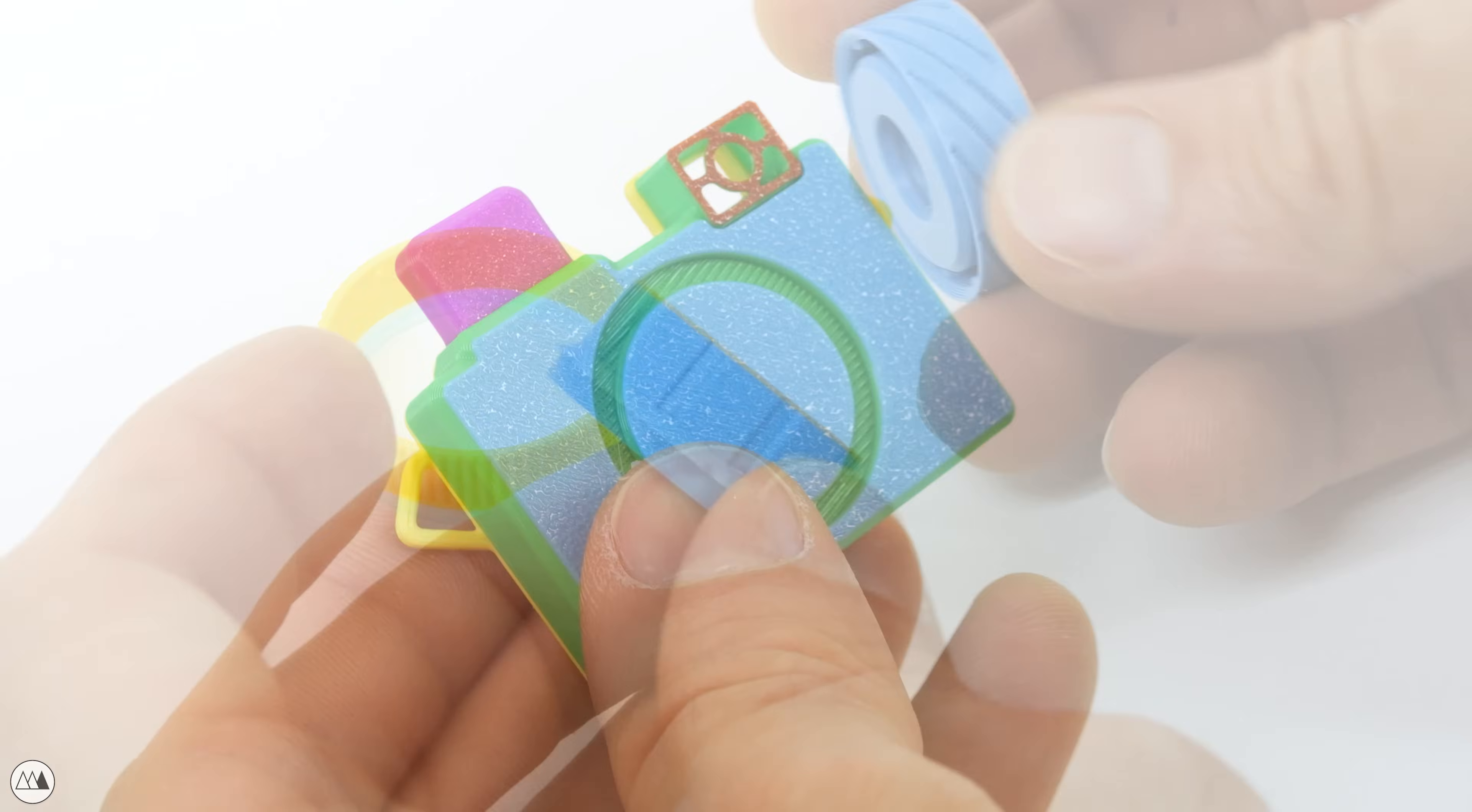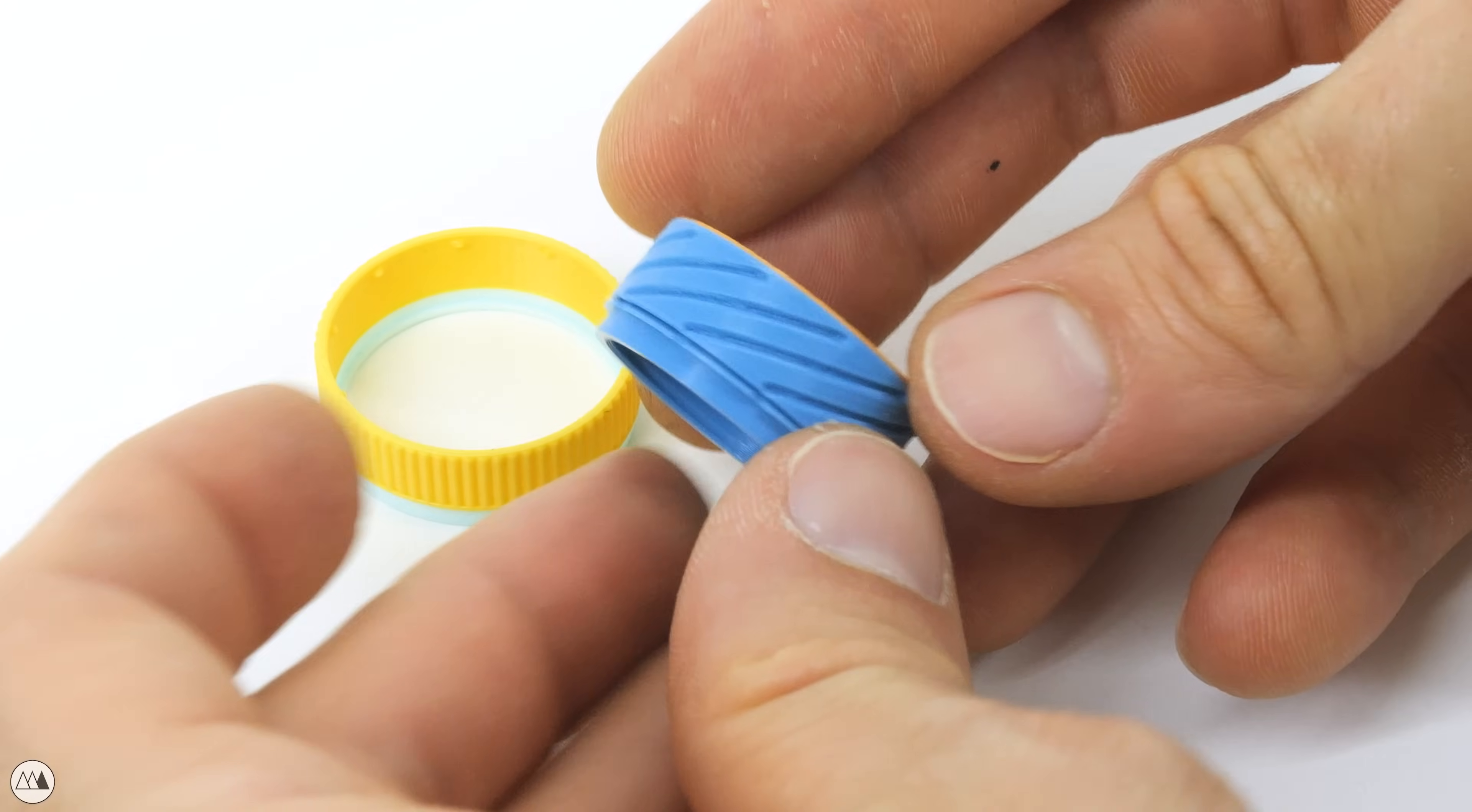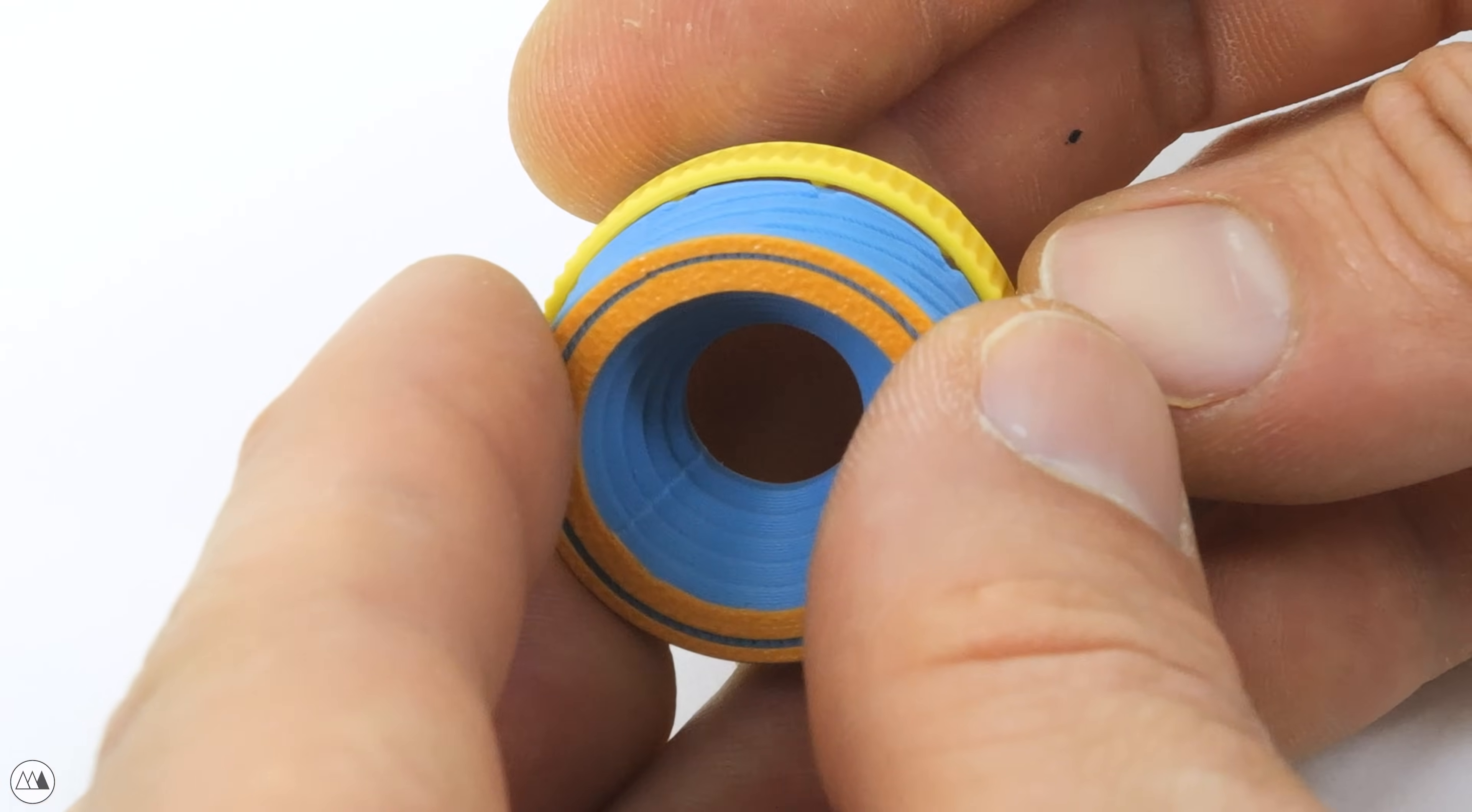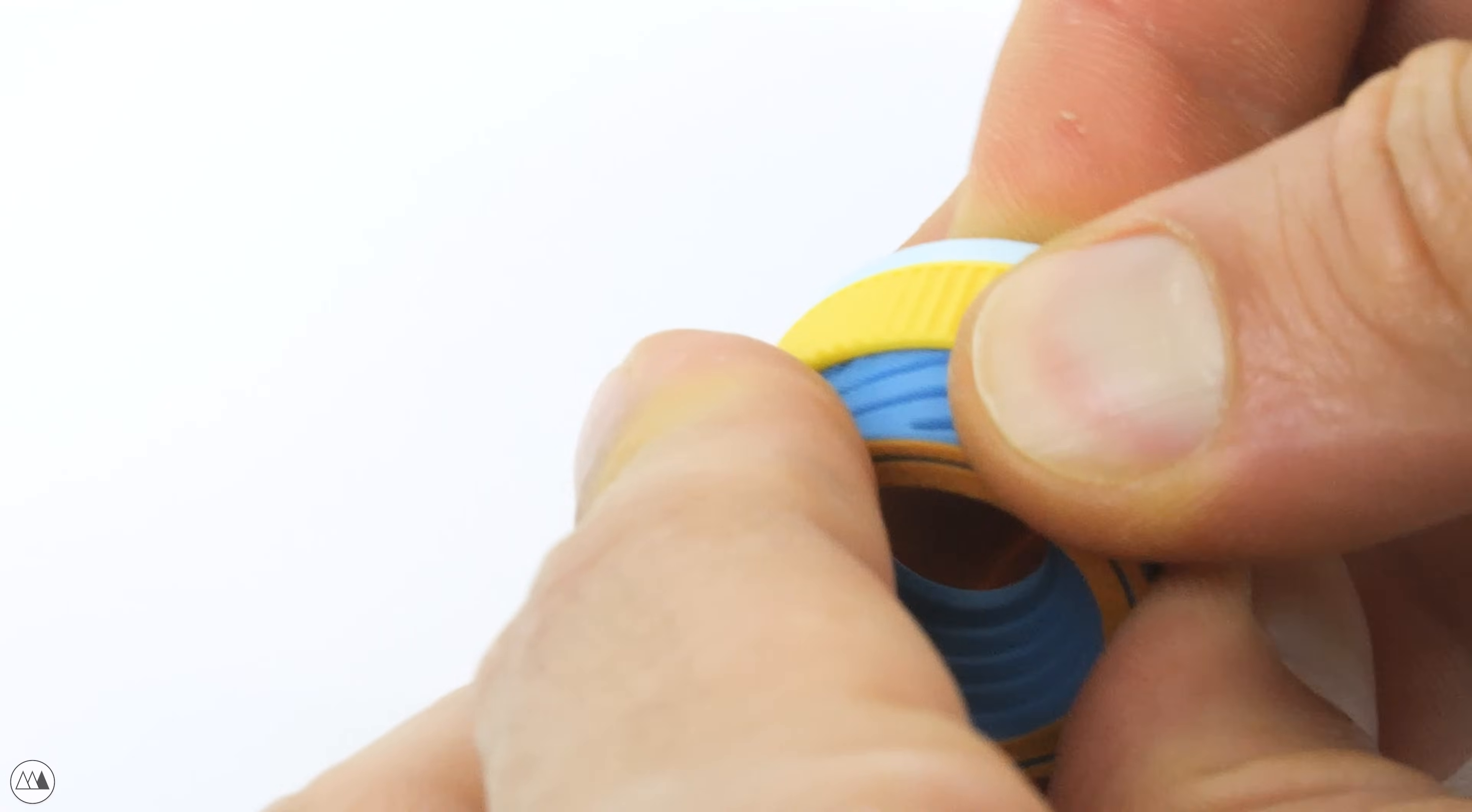And now we'll work on the lens, first sliding together the two inner parts. And then for the outer ring, we'll align the little inner pins with the helical tracks and work that into place by pulling the outer ring onto those tracks.